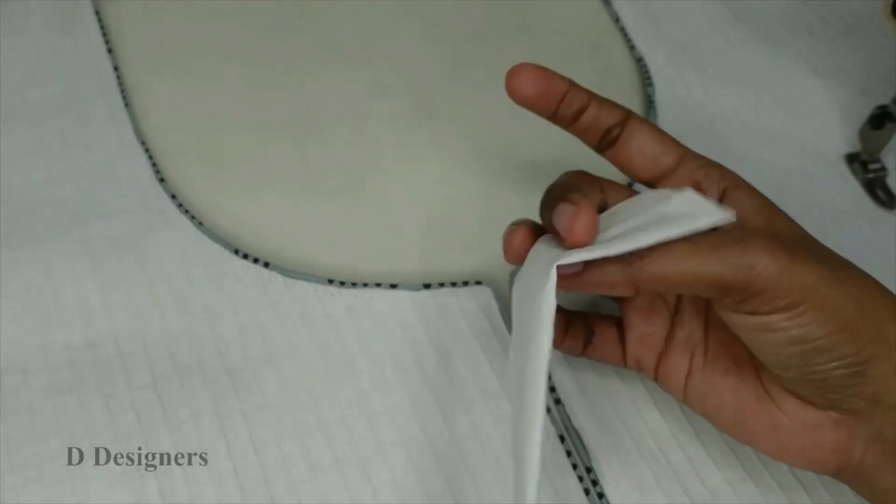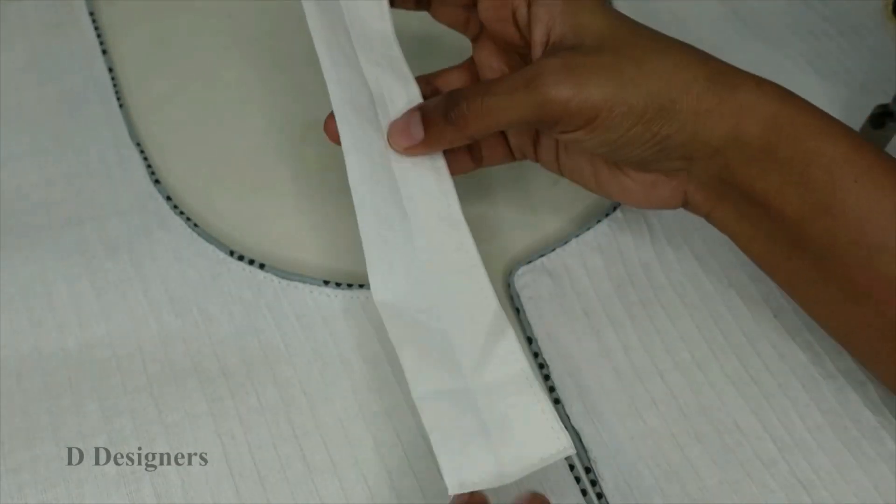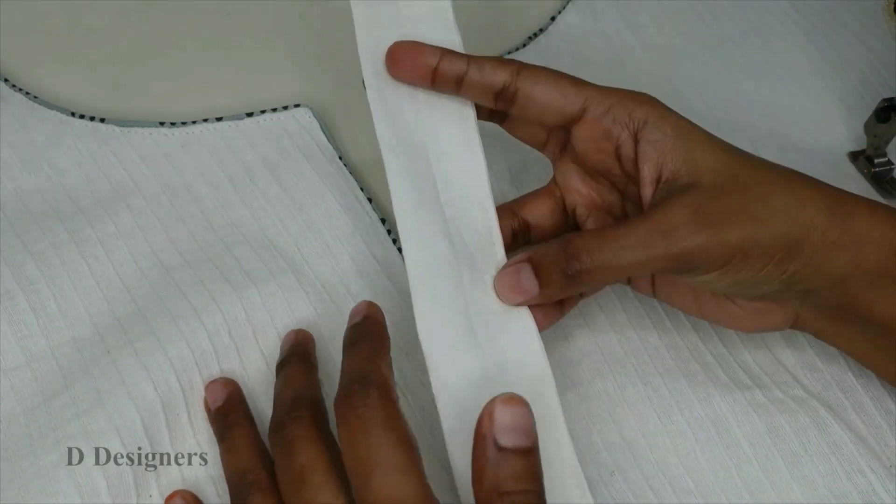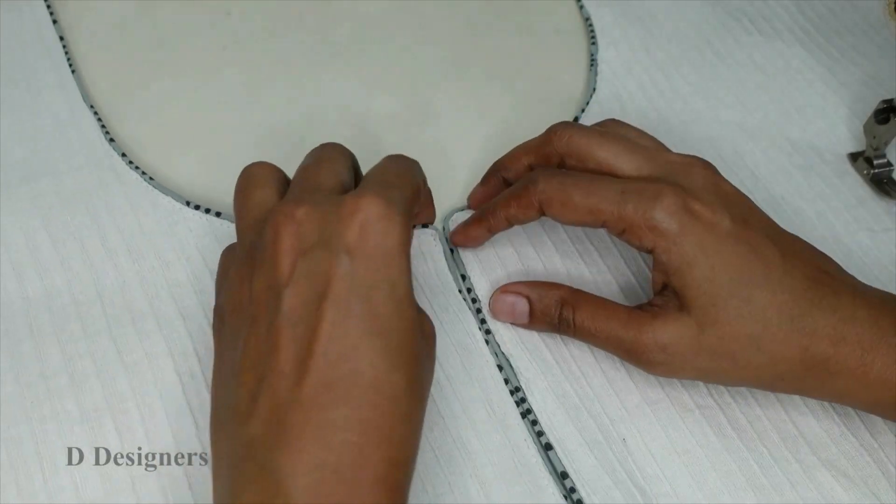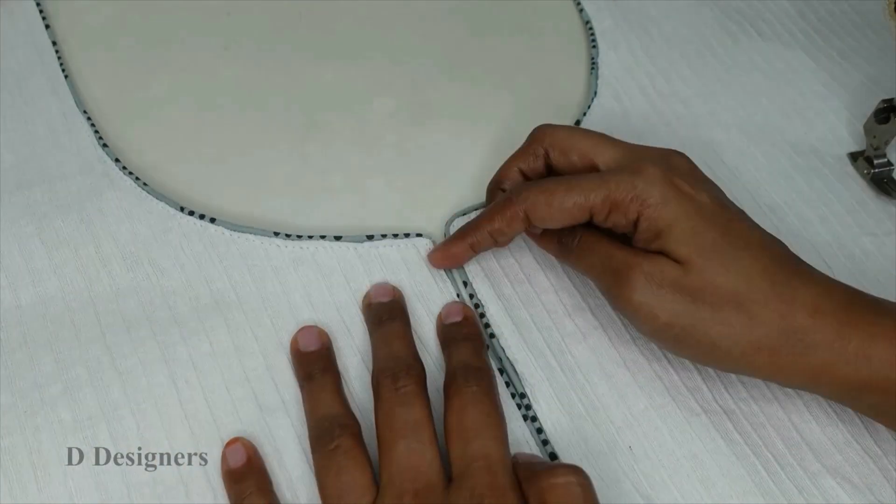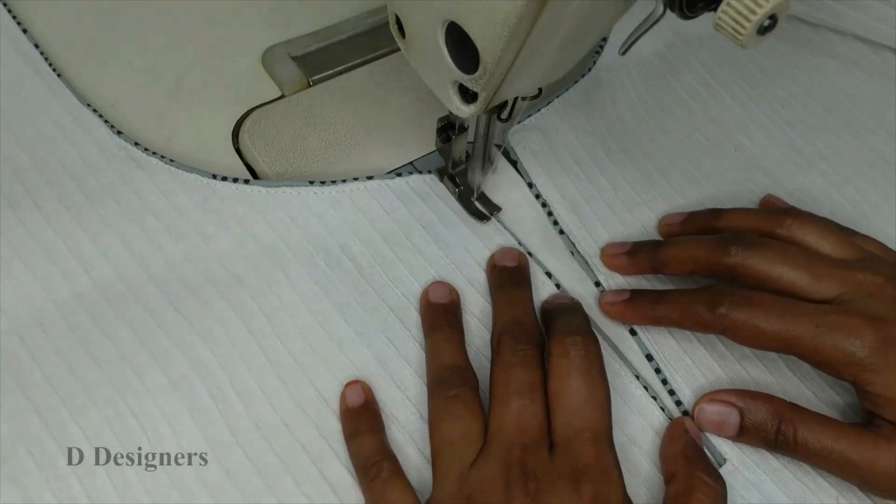To close this placket, I have taken a strip of fabric and I have folded on all the sides. Take as per the required length and I am keeping under the placket and make a stitch around the placket.